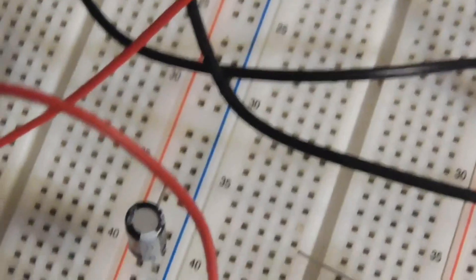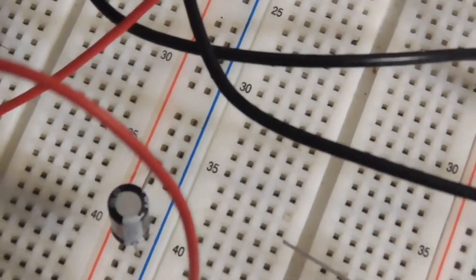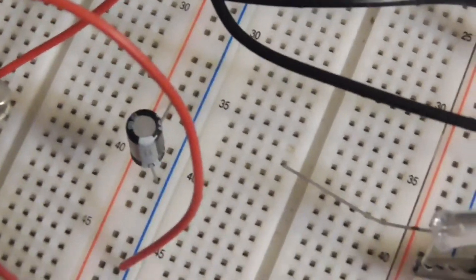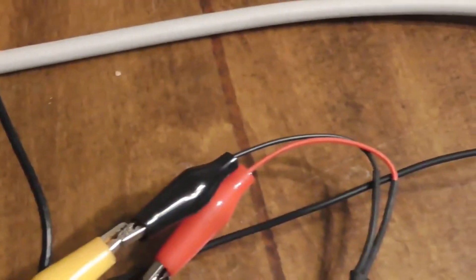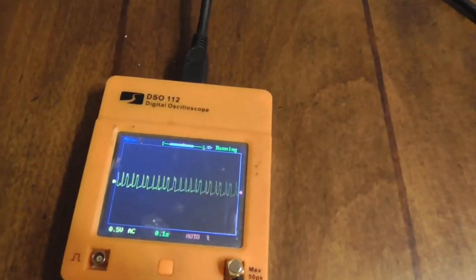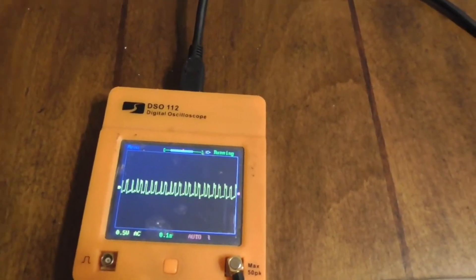A bigger capacitor obviously would mean longer charge time, which would slow down the pulses if I really want to change this. So the next step would be to feed these pulses into a step-up or step-down transformer to do more interesting things with it.